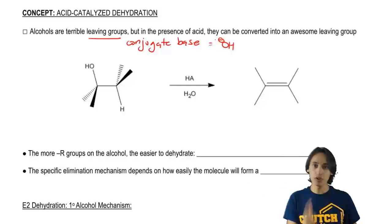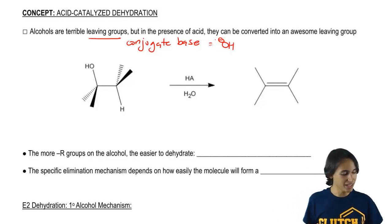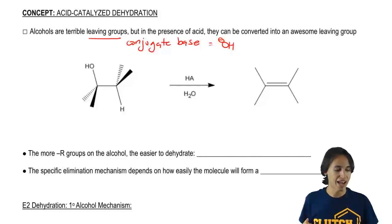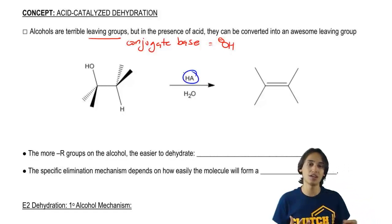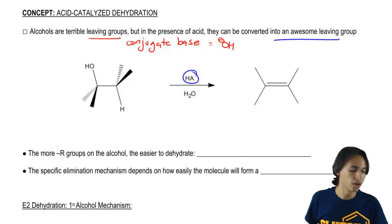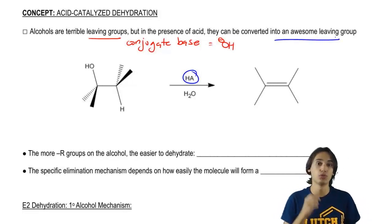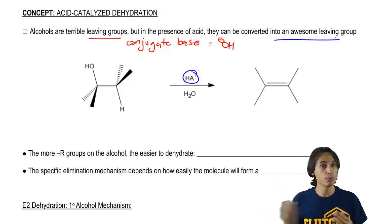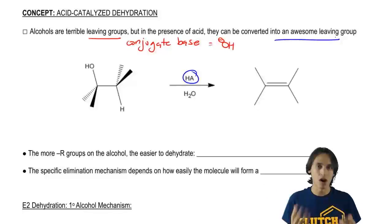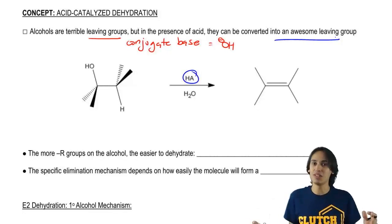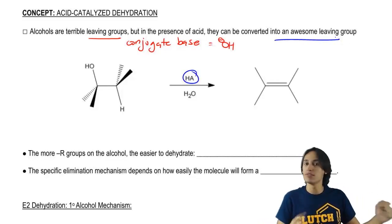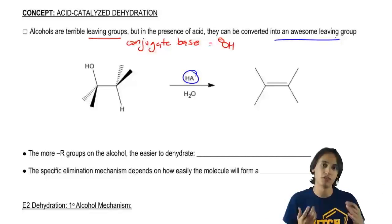But it turns out that there is one thing we can do to make alcohol a better leaving group, and that is to use acid. If we can use some kind of acid, we can actually convert alcohol into an awesome leaving group. That awesome leaving group would just be that we add an H to it, we protonate it so it turns into water. And water is an awesome leaving group because it's neutral. It loves to leave and it loves to just be by itself in solution.